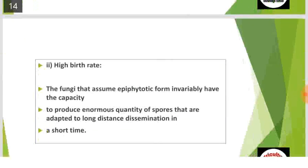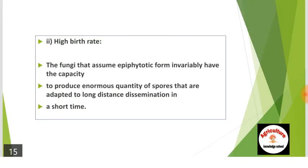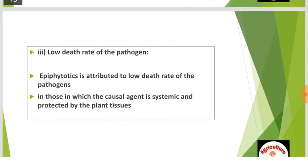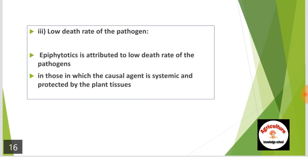Second is high birth rate. The fungi that assume epiphytotic form invariably have the capacity to produce enormous quantities of spores that are adapted to long-distance dissemination in a short time. Third is low death rate of the pathogen: epiphytotic is attributed to low death rate of the pathogen in cases where the causal agent is systemic and protected by the plant tissues.